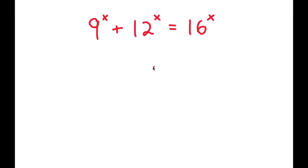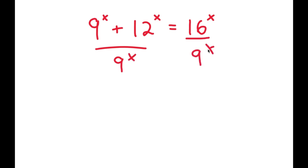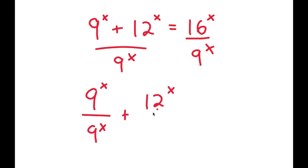So in this problem, I have 9 to the power of x plus 12 to the power of x is equal to 16 to the power of x. What I'm going to do is first start by dividing both sides by 9 to the power of x. So this means that I get 9^x over 9^x plus 12^x over 9^x is equal to 16^x over 9^x.